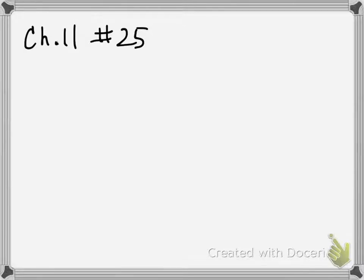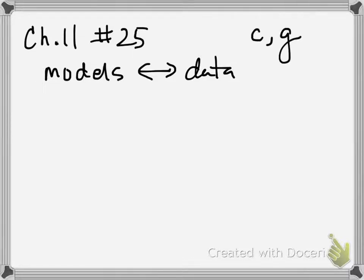But the main point of this type of problem is for you to consider models and the data that create models, and then the data that refines models over time. So I picked this problem and parts of it. I only picked C and G for us to do. And the reason why I picked this problem is because I thought it was really important to think about the fact that we have models to explain biological phenomenon.